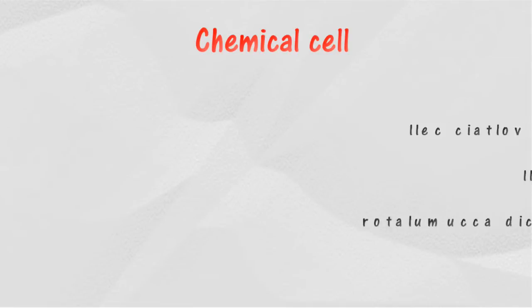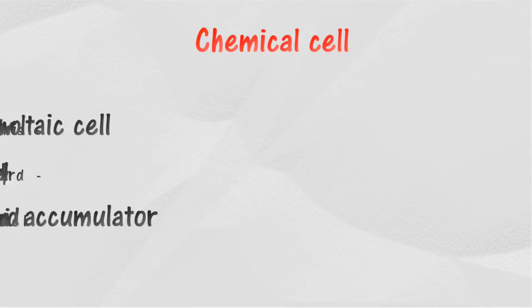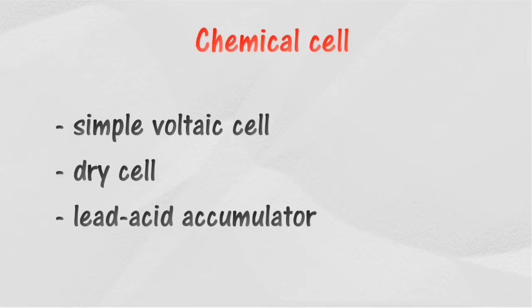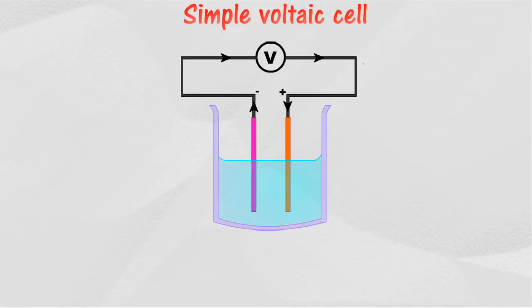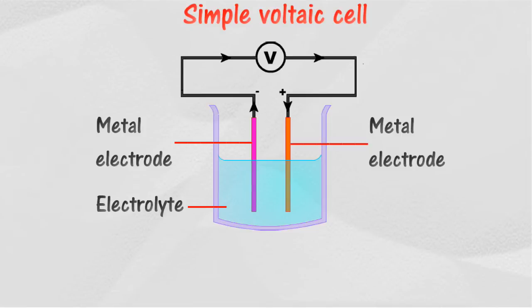Chemical cells convert chemical energy into electrical energy. Examples of chemical cells include simple voltaic cell, dry cell, and lead acid accumulator. The simple voltaic cell is made of two different conductors immersed into an electrolyte solution connected by wires.